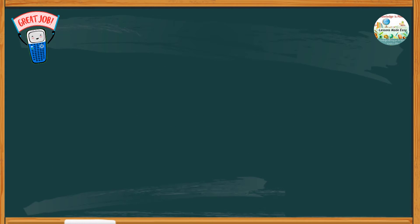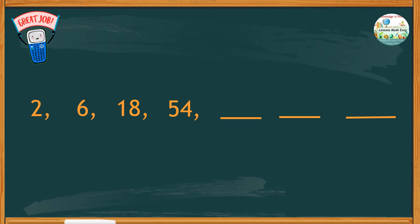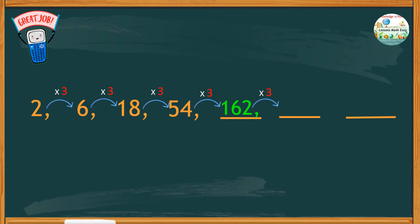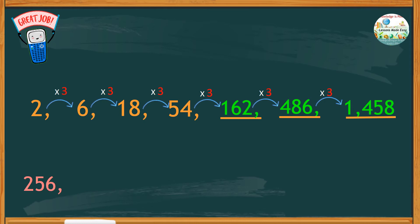Let's try another sequence: 2, 6, 18, and 54. What would be the next three numbers? Study this set. 2 is multiplied by 3 to get 6, then again 6 is multiplied by 3 to get 18. Continue with 18 times 3, which is 54. And so 54 times 3 would be 162. Multiply this number by 3, we get 486. Times 3 would give us 1458.